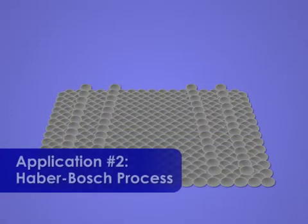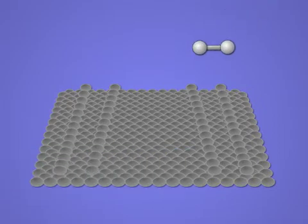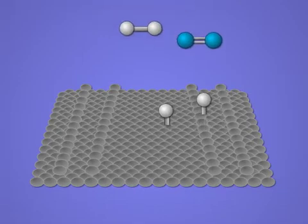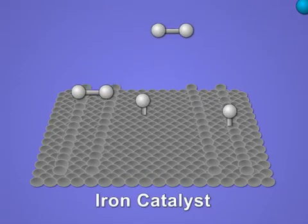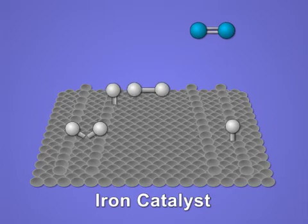The Haber-Bosch process uses hydrogen and nitrogen to produce ammonia, most importantly for artificial fertilizers. It is an energy-intensive process catalyzed by iron or, less frequently, cobalt-molybdenum alloys.